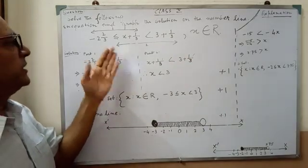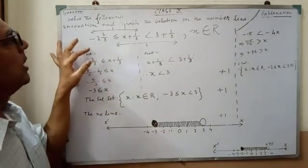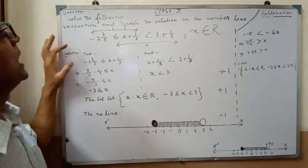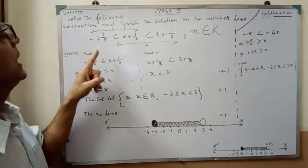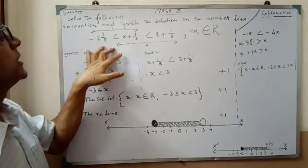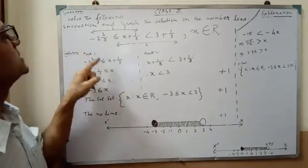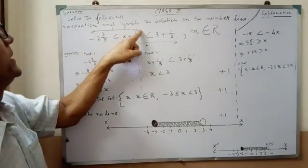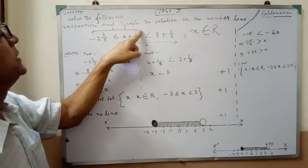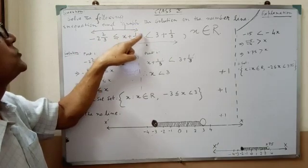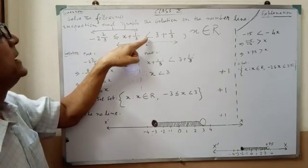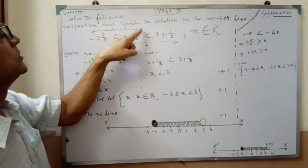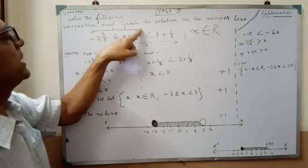There are many ways we may solve this. One of them I am showing you. I want to break the equation into two parts. Part 1 goes from here to here — up to just before the second inequality sign. That is the first part.